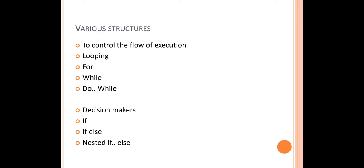Other structures are used to control the flow of executions. For looping structures, we have for, while, and do-while, and for decision making we have if, if-else, and nested if-else. These are some of the other structures used in high-level programming language. You must know the differences between for, while, and do-while, their syntaxes, and also the importance of decision makers and how conditions get processed.